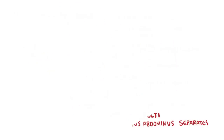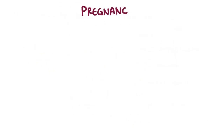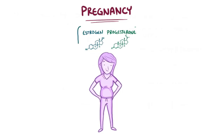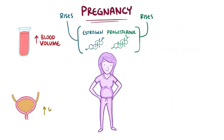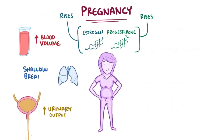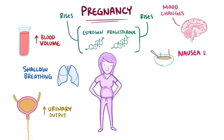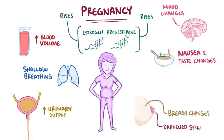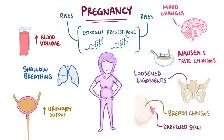As a quick recap: during pregnancy, both estrogen and progesterone rise, which causes a number of changes in nearly every organ system. There is an increase in blood volume, increased urinary output, shallow breathing, mood changes, nausea and changes in taste, darkening of the skin, breast changes, and loosening of the ligaments — all of which help prepare for the delivery of a healthy baby.